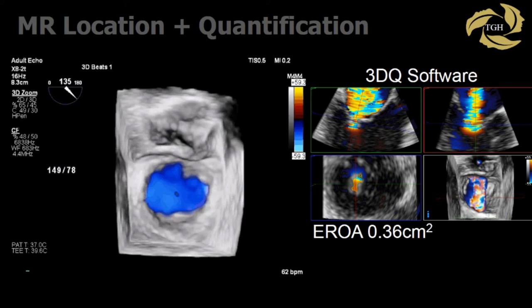I'll close with 3D color. You can use it — and it's important — to look for MR localization. You can take it to 3DQ software or any multi-planar reconstruction software and actually trace out the EROA. You can see that the EROA is not circular. We calculate a physiological EROA based on various parameters, but now you're looking at a more anatomical one. It's important to note this is at a 16 Hz frame rate — the better the frame rate, the more images you can actually use.